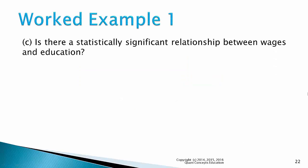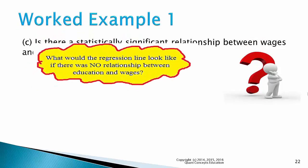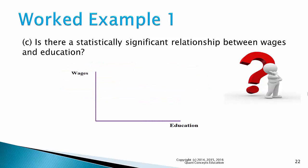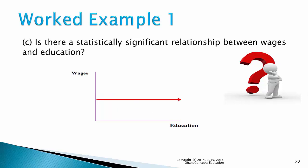Part C: is there a statistically significant relationship between wages and education? We have to ask ourselves: what would the population regression line look like if there was no relationship between wages and education? If there is a positive relationship, the regression line should have a positive slope coefficient. If there is a negative relationship, it should have a negative slope coefficient. So if there is no relationship between wages and education, the regression line should be flat, and the slope coefficient beta 1 would be equal to 0. So we use hypothesis testing to determine if the population regression slope coefficient is equal to 0, based on what we observed from the sample regression line.